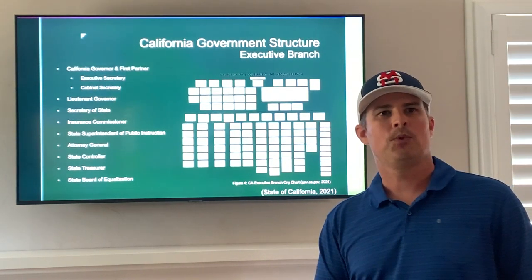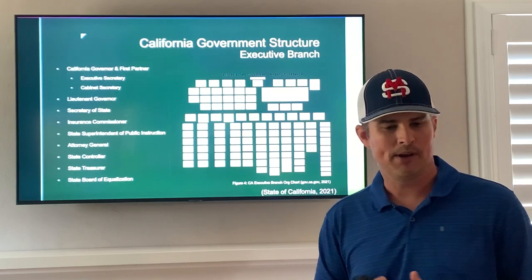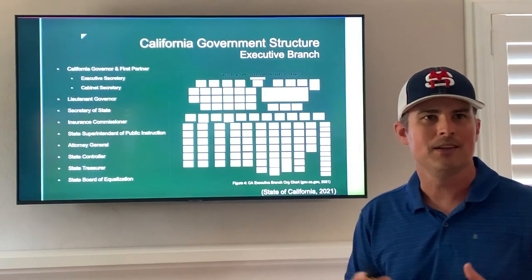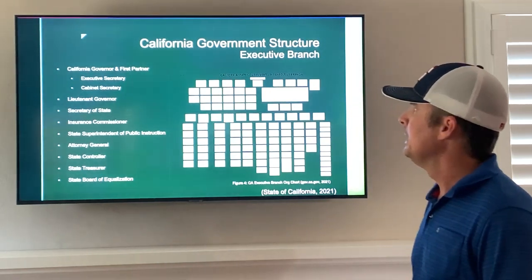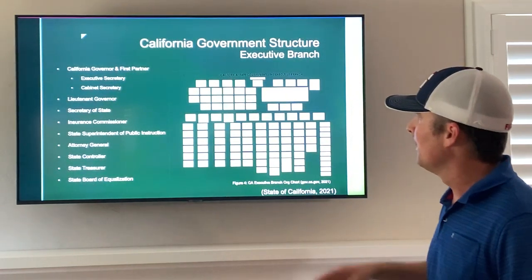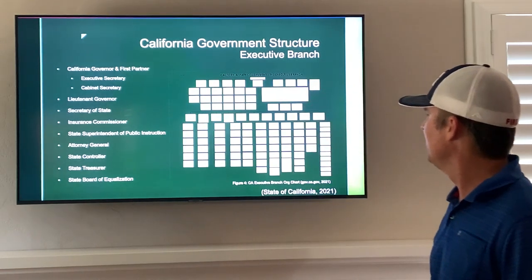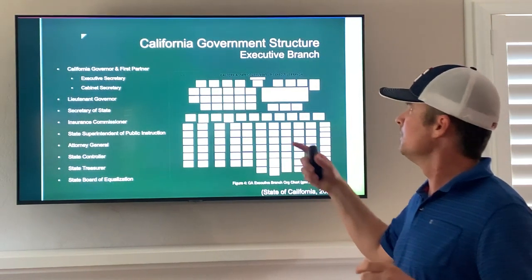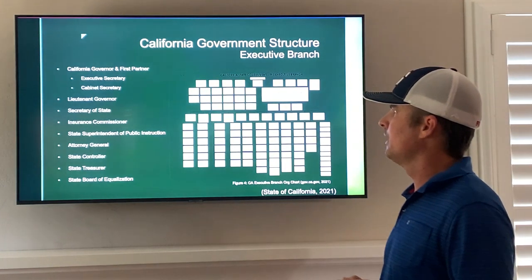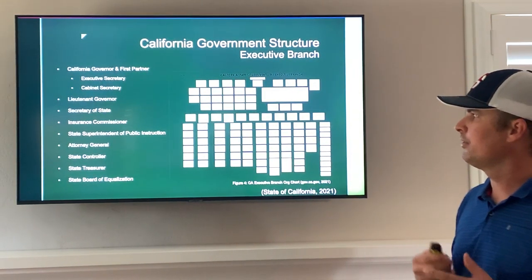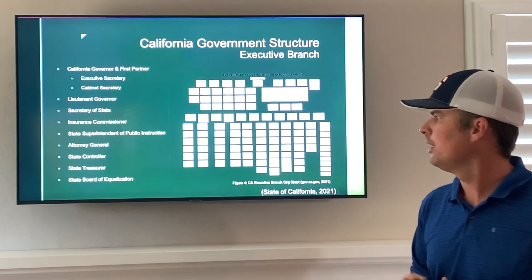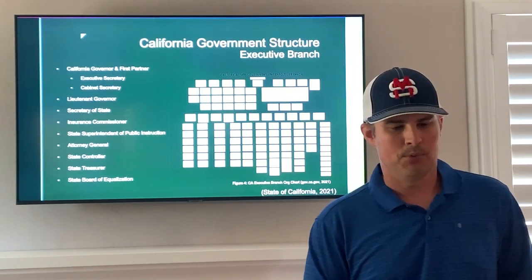California's government structure includes the executive, legislative, and judicial branches. Starting with the executive branch, as shown in figure four, it takes an army to run the executive branch. At the top of the organizational chart is the governor, California governor and first partner, and directly working for them, the executive secretary and cabinet secretary. We also have the lieutenant governor, secretary of state, insurance commissioner, state superintendent of public instruction, attorney general, state controller, state treasurer, and the state board of equalization.